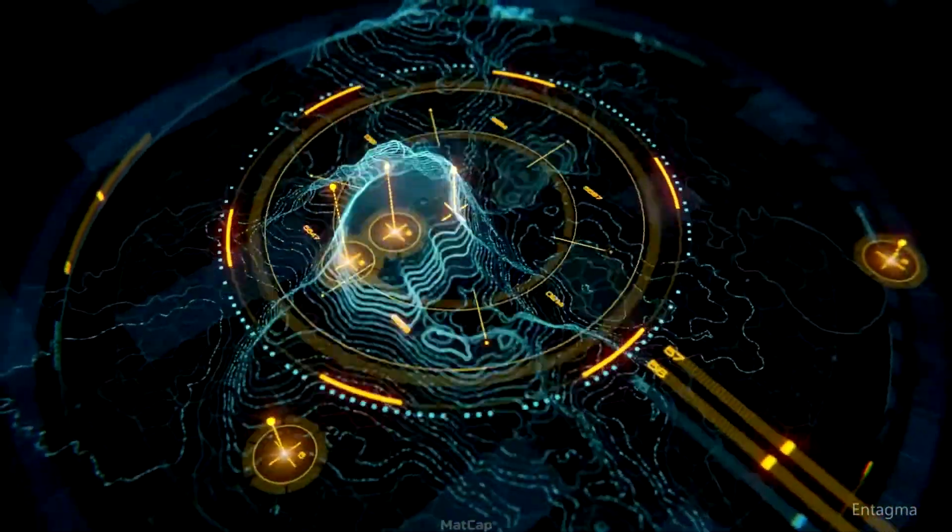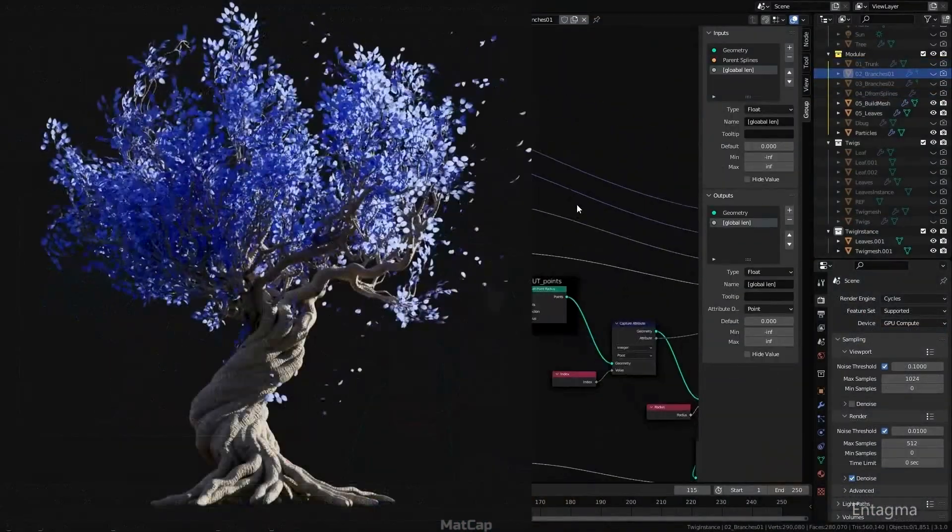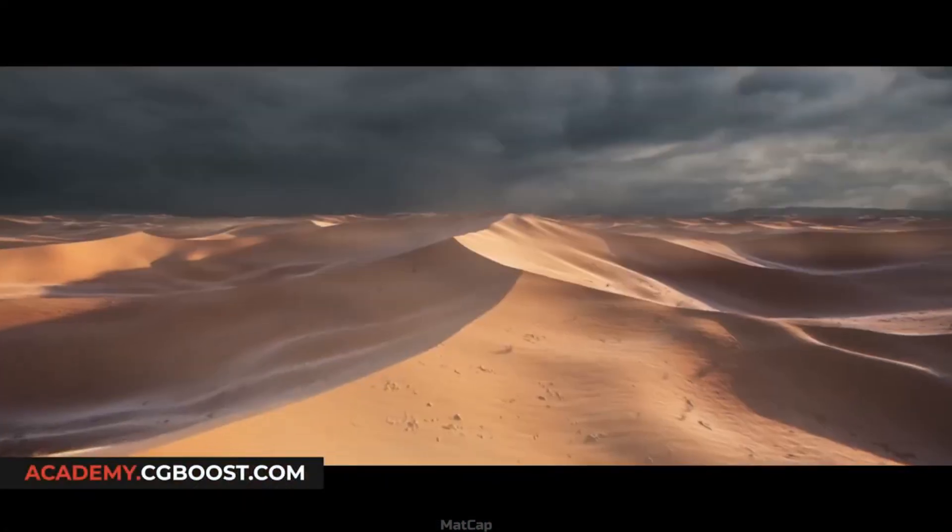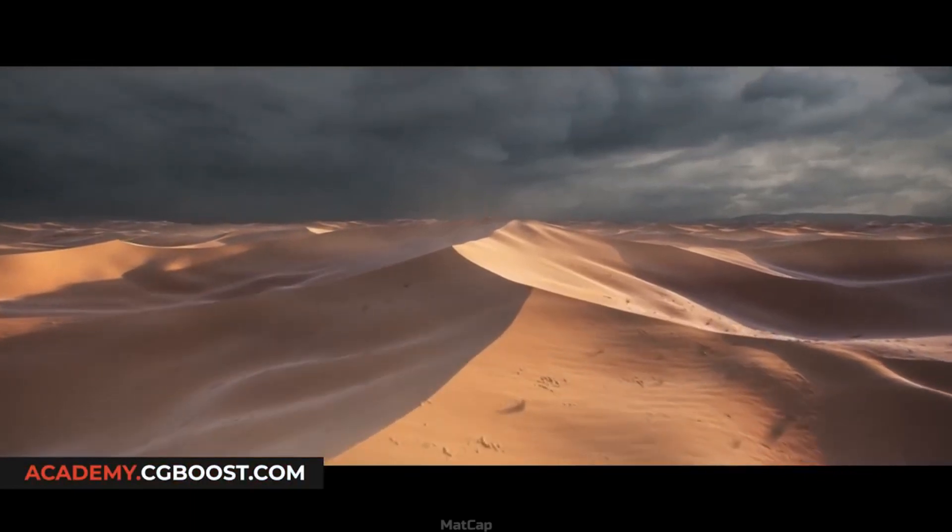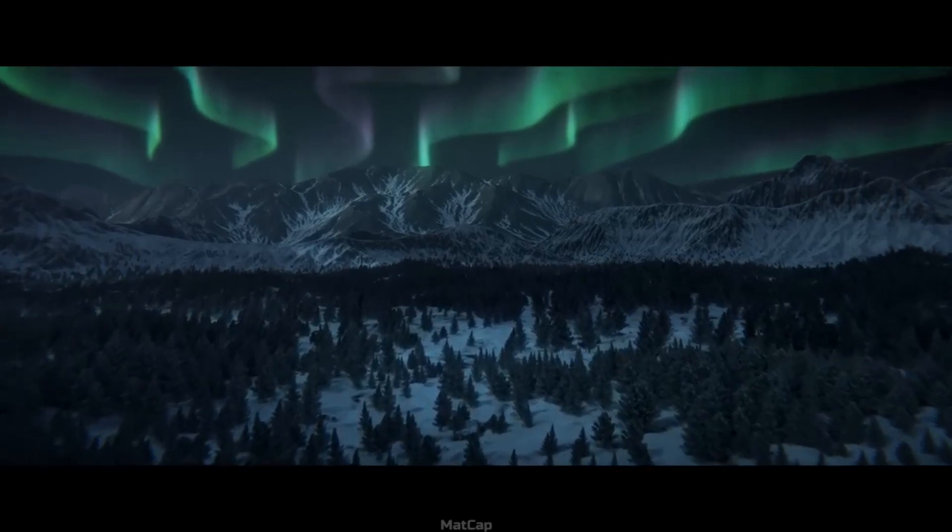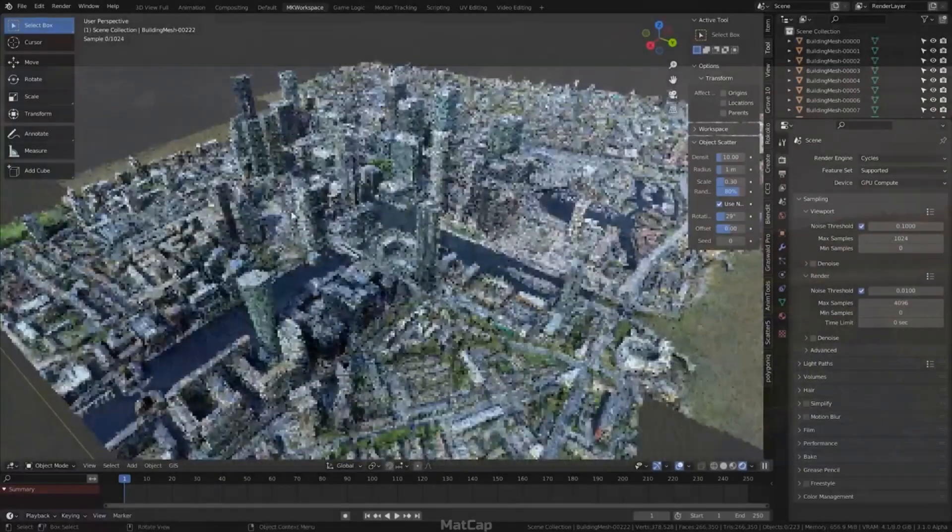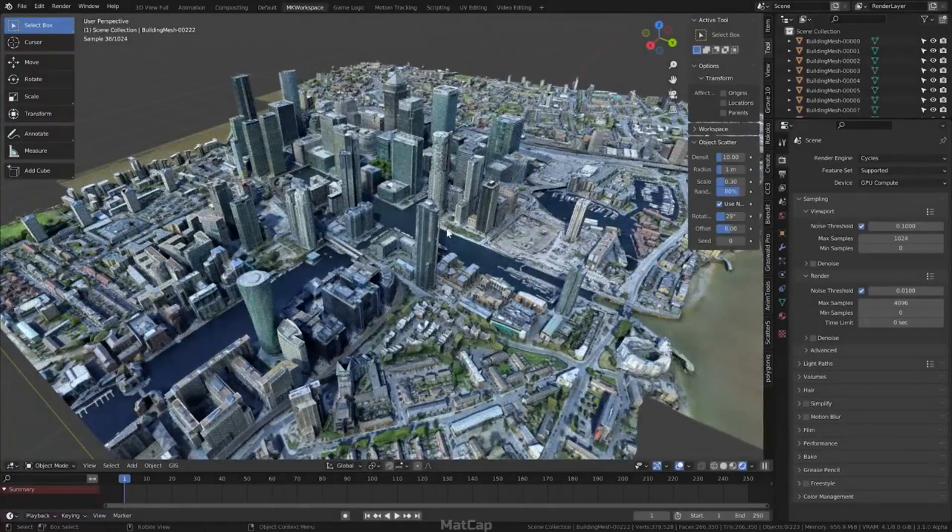This is especially useful in motion graphics as changes can be made instantaneously. However, it is also an extremely useful tool for environment creation. For example, you can generate landscapes of your locations just using nodes. Or my favorite, creating entire cities with buildings that have different structures without any modeling.